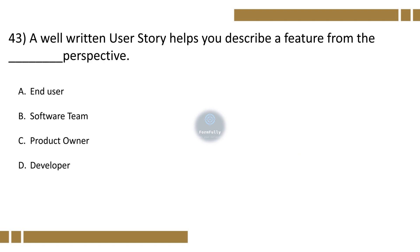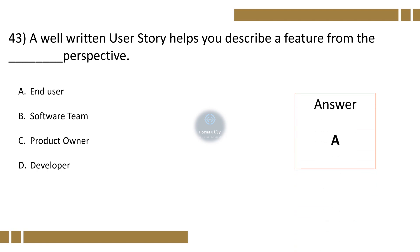Question 43. A well-written user story helps you describe a feature from the dash perspective. Option A: End User, B: Software Team, C: Product Owner, D: Developer. The correct option is A: End User.